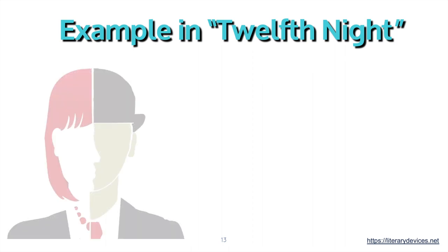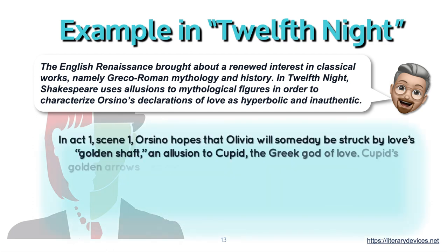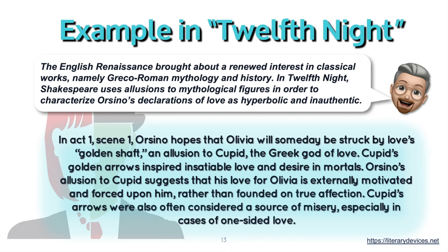Let's look at an example in Twelfth Night. The English Renaissance brought about a renewed interest in classical works, namely Greco-Roman mythology and history. In Twelfth Night, Shakespeare uses allusions to mythological figures to characterize Orsino's declaration of love as hyperbolic and inauthentic. In Act 1, Scene 1, Orsino hopes that Olivia will someday be struck by love's golden shaft — an allusion to Cupid, the Greek god of love. Cupid's golden arrows inspired insatiable love and desire in mortals. Orsino's allusion to Cupid suggests that his love for Olivia is externally motivated and forced upon him, rather than founded on true affection. Cupid's arrows were also often considered a source of misery, especially in cases of one-sided love.